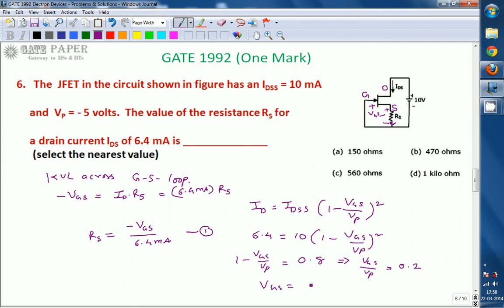VGS equals 0.2 times VP. 0.2 into minus 5, which is minus 1 volt. This is minus 1 volt.